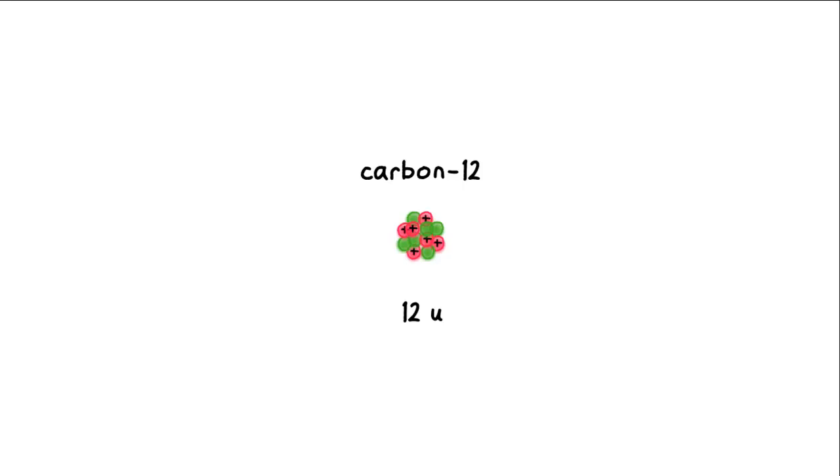The nucleus of a carbon-12 atom consists of six protons and six neutrons. So what's the mass of six protons and six neutrons? Surely it's also 12U?